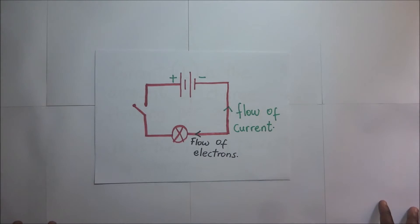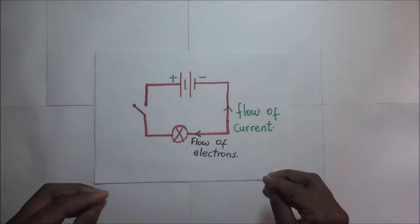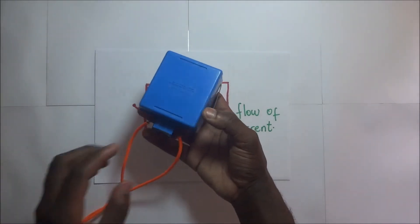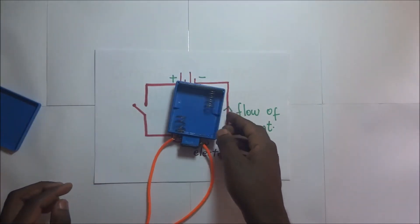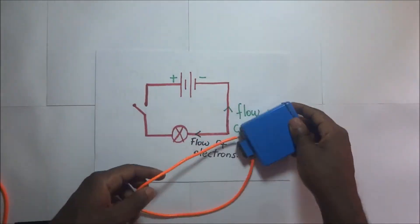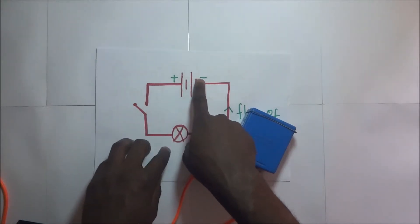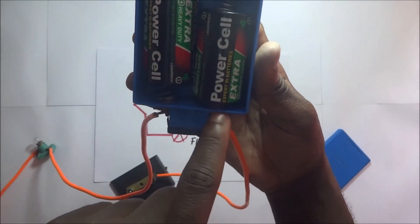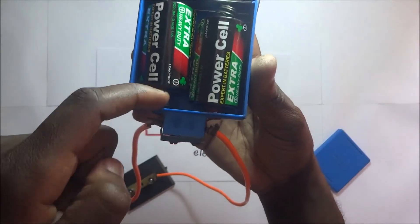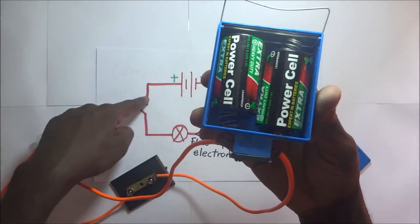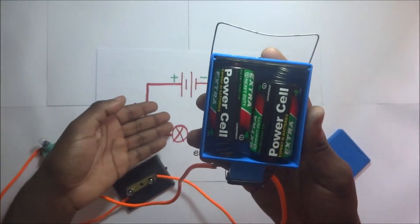Now we are going to connect the circuit physically. First, we have the battery — positive here and negative there. We have our cell holder right here and we are going to put the batteries in there. After placing our batteries, we connect the negative terminal to one side of the bulb. Our positive terminal connects to the switch, and the negative terminal connects to the bulb — we are just following our circuit diagram.